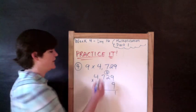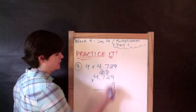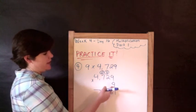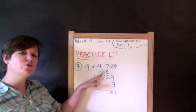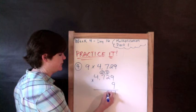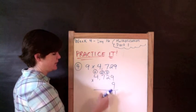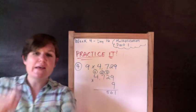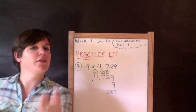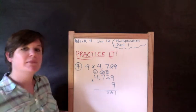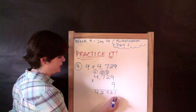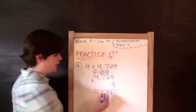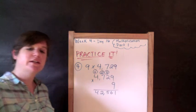Good, 26. 9 times 7 is 63, and 63 plus 2 is 65. So 6 and then 5. 9 times 4 is 36. 36 plus 6 is 42. Excellent. Ones, tens, hundreds, comma. 42,561. Ba-boom, ba-boom.